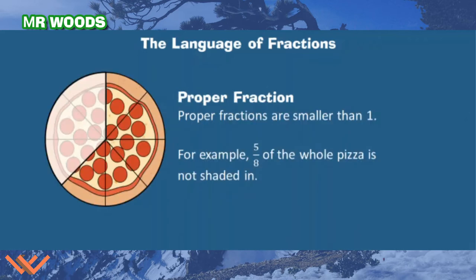A proper fraction is where fractions are smaller than one. So for example, I have 1, 2, 3 pieces out of this whole covered. Let's say we ate those three pieces. So I have 1, 2, 3, 4, 5. So five eighths of a whole pizza is not shaded in, or not eaten.